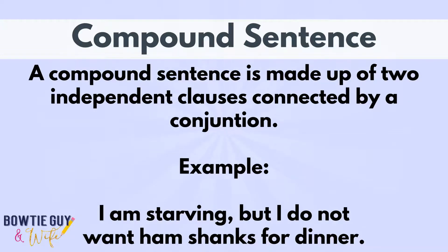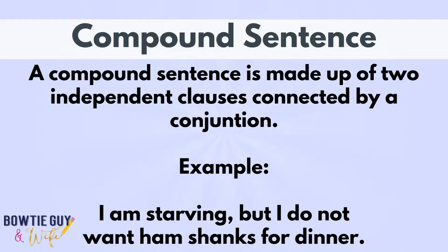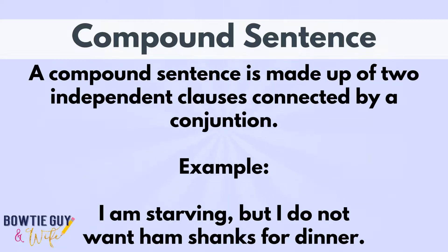A compound sentence is made up of two independent clauses, or ideas, connected by a conjunction. Here's an example: I am starving — that's one idea — but I do not want ham shanks for dinner — that's another idea. The word 'but' is the coordinating conjunction that combines those two simple sentences.